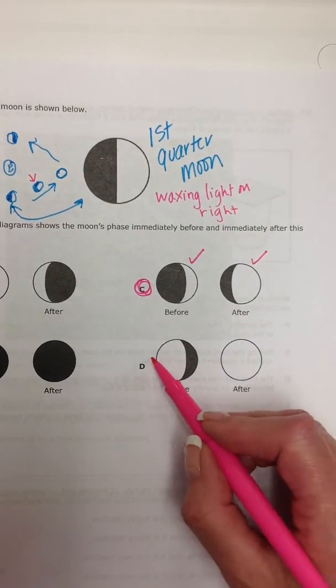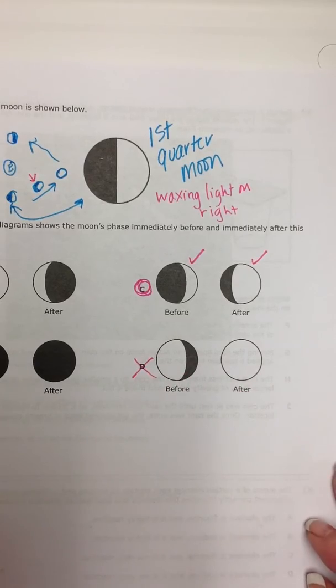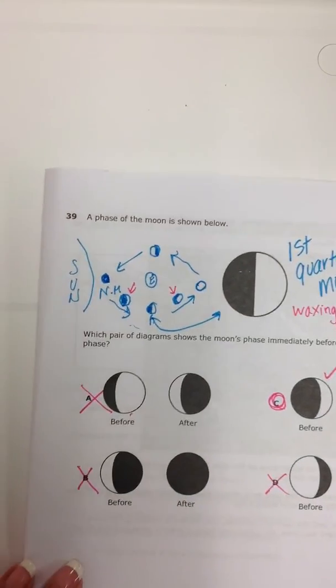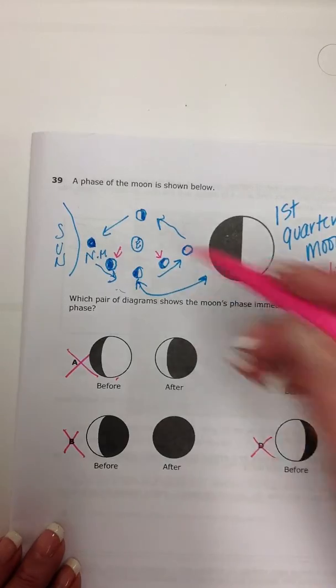This, no. This is a waning gibbous. And that's our full moon. So there you go. Our answer choice is C.